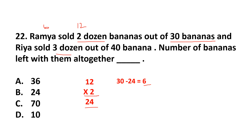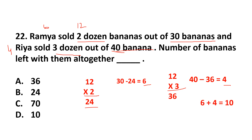Ria sold 3 dozen out of 40 bananas. 3 dozen means 12 multiplied by 3, which is 36. So she is left with 40 minus 36 = 4 bananas. Ria has 4 and Ramya has 6, so altogether they have 6 plus 4 = 10 bananas. The answer is option D, 10 bananas.